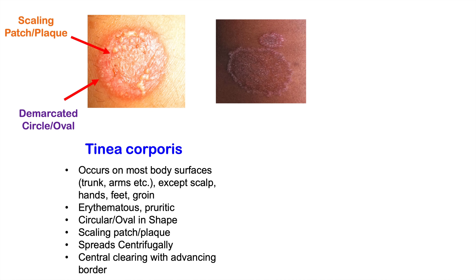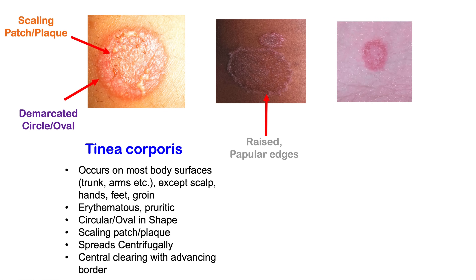There is a clinical variant where tinea corporis can look quite different — with a very raised border and sharply raised, almost papular edges. Another image shows the outer advancing border still quite erythematous with a central clearing visible.